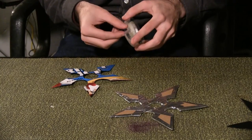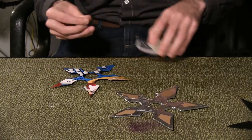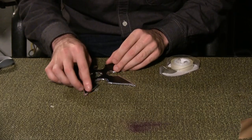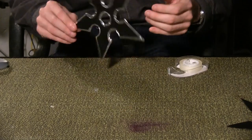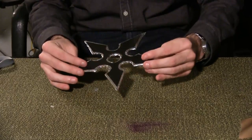Use double stick tape to adhere the painted cardstock to the cardboard piece. Pay special attention to the points. Repeat on the other side. And there's your finished shuriken.